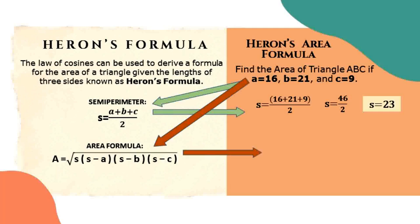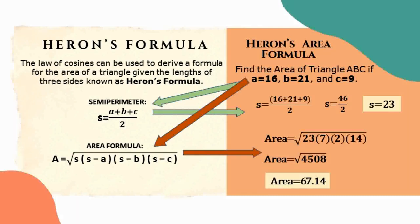Next, to substitute the given to the area formula, our area is equal to square root of 23 times 7 times 2 times 4. So our area is equal to square root of 4508. Solve the square root. So our area is equal to 67.14.